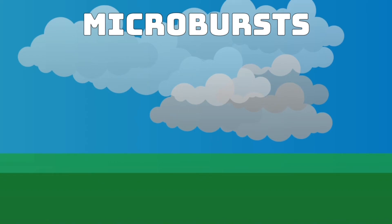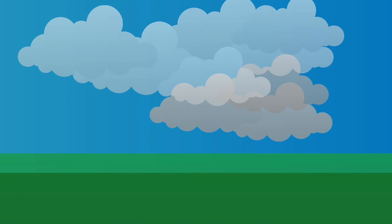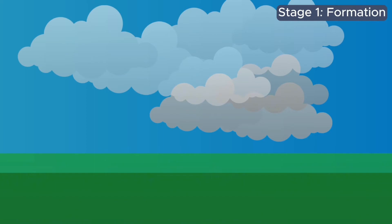Microbursts go through three stages of development. Stage one is formation. Microbursts begin as a downdraft which pulls in dry cold air at upper atmospheres and begins to evaporate water droplets as it continues downwards.